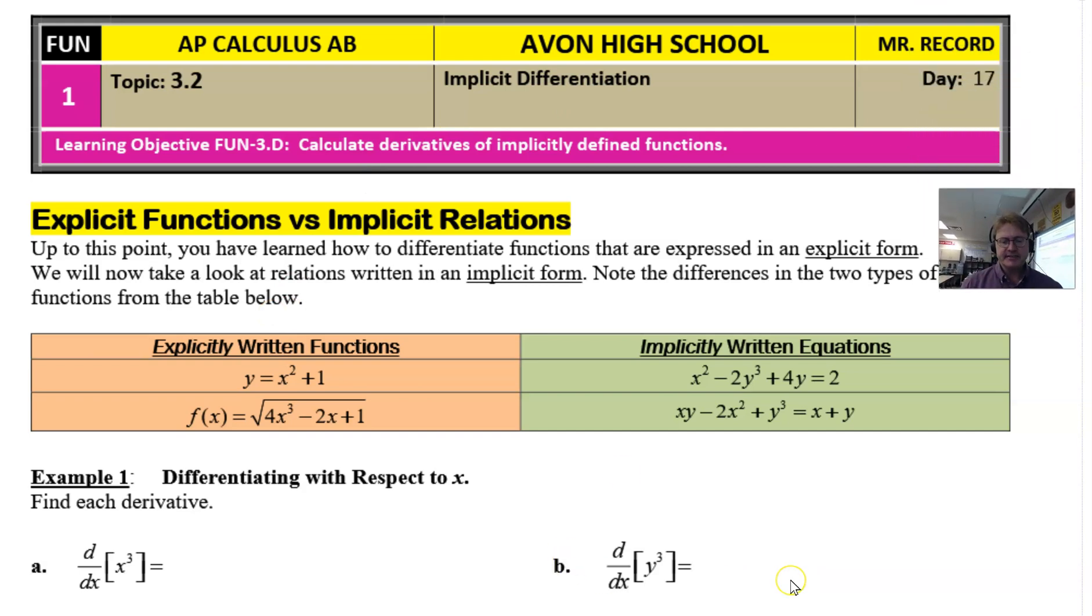When you talk about implicit differentiation, the first thing that you need to think about is what does it mean for an equation to be written implicitly. And for that matter, if there's an implicit way to write an equation, then is there an explicit way to write an equation? And the answer is certainly yes on both accounts. So if you take a look at this table, in the orange column I have a pair of explicitly written functions, and in the green column I have a pair of implicitly written equations. Now the difference between the two, hopefully, is easy to spot.